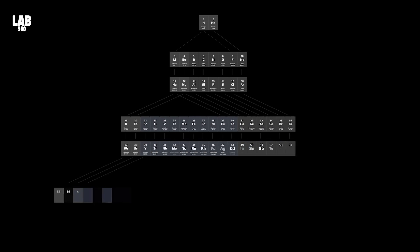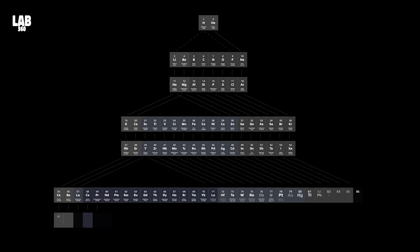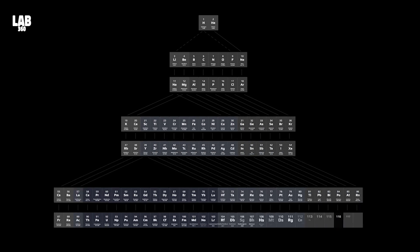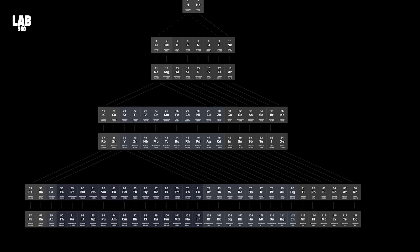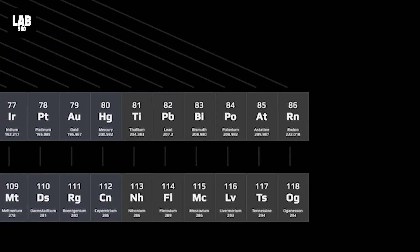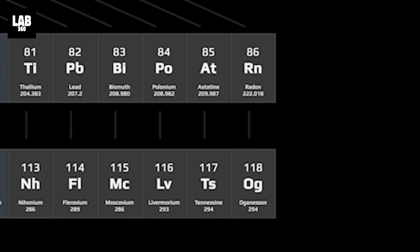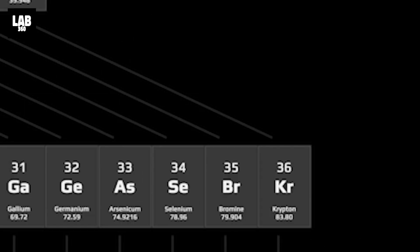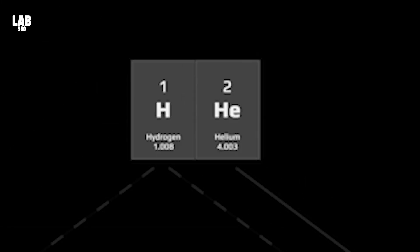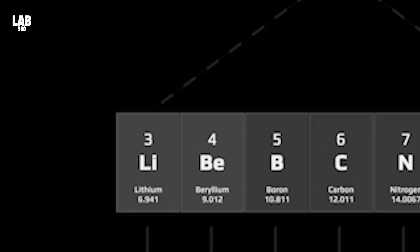But we begin with the periodic table. The periodic table is a sequence of nuclear counts of protons. Hydrogen has one proton, helium two protons, lithium three protons.